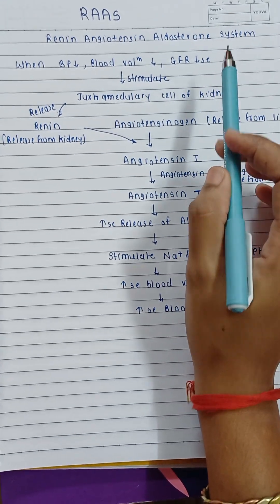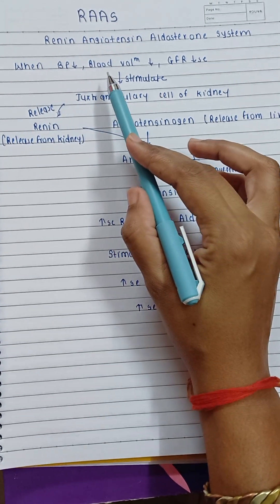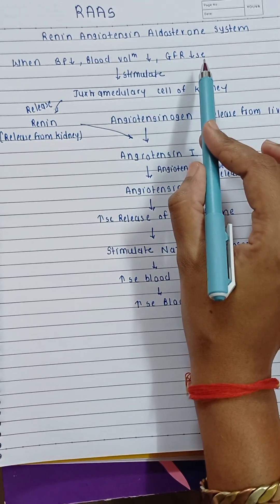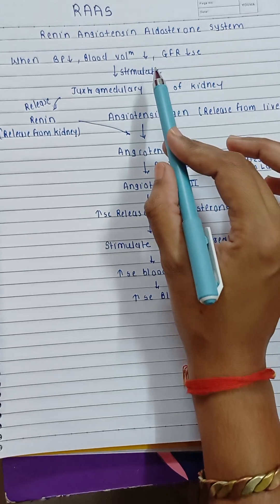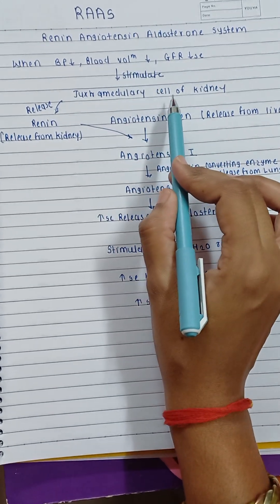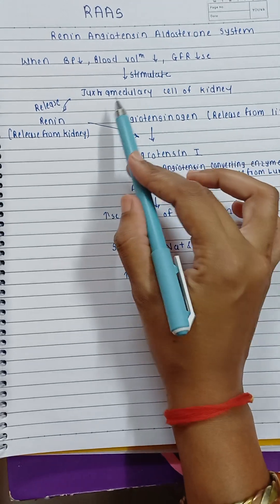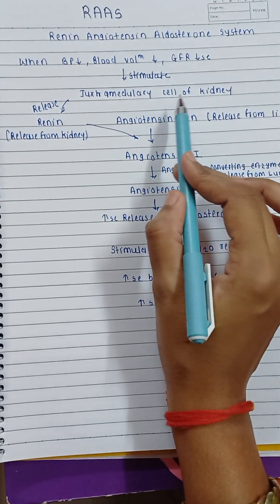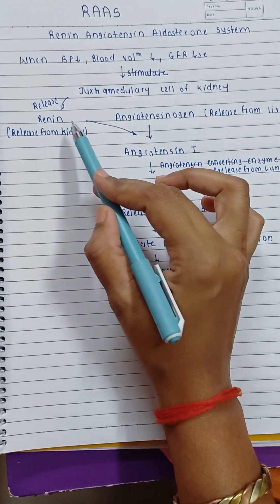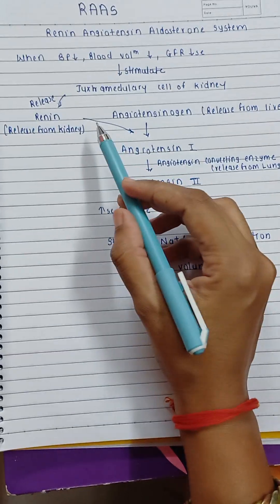When blood pressure decreases, blood volume decreases, and glomerular filtration rate is decreased, this stimulates the juxtaglomerular cells present in the kidney, and those juxtaglomerular cells release renin from the kidney.